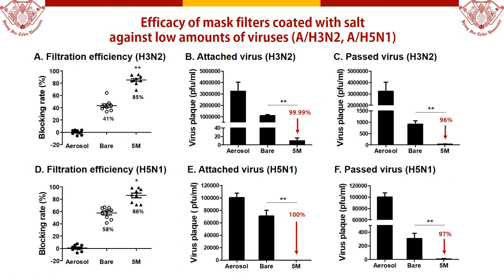Using low concentrations of viruses, H3N2 and H5N1, the experiment was repeated on mask filters coated with 5 molar concentration salt, which was the most efficient in the previous test. As a result, the filtration efficiency of the salt-coated filter was increased and the virus infectivity was decreased. Importantly, the results were similar regardless of the virus strain.